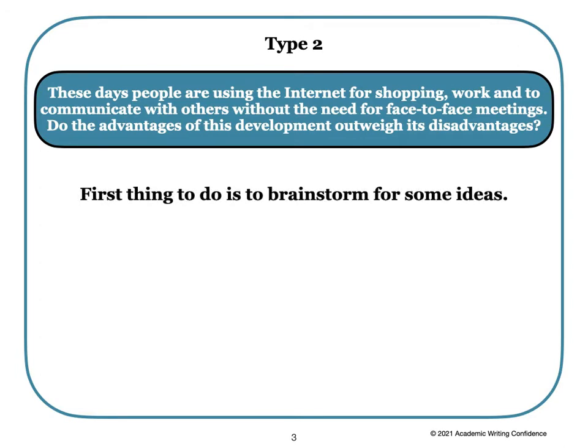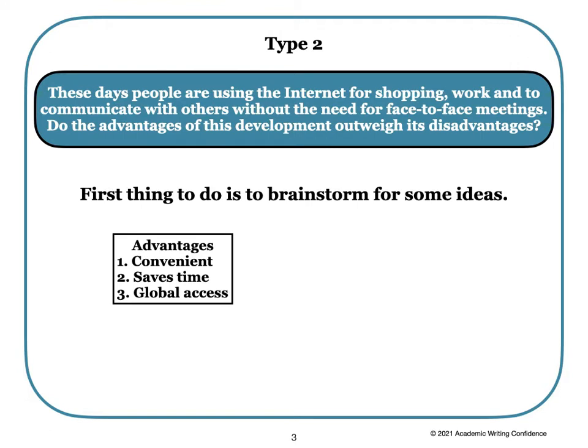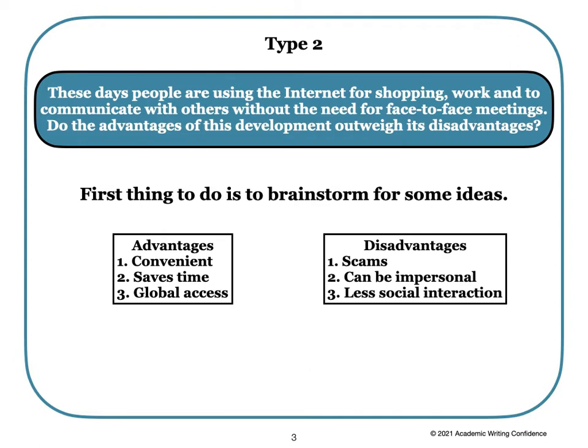As always, the first thing to do is to brainstorm for some ideas. Perhaps you come up with these ideas for the advantages of using the internet: it's convenient, it saves time, and you have global access. You then think of some disadvantages: there could be scams, it can be impersonal, and there is less social interaction.